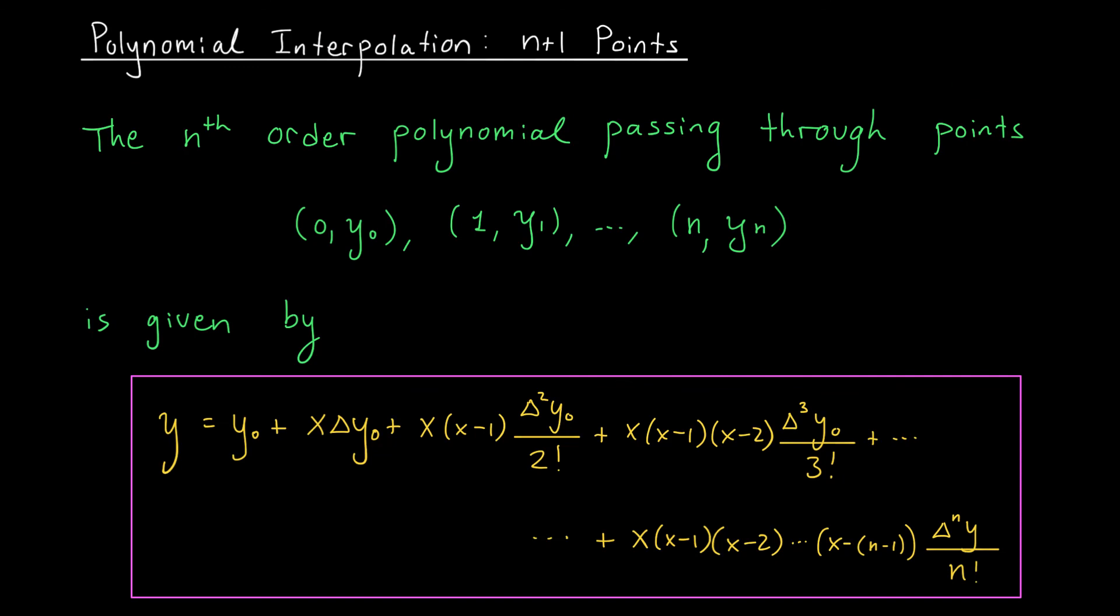The exact same methods that we use to find a cubic polynomial passing through four data points can be used to find a polynomial of order n passing through n plus 1 data points. The expression for this polynomial is given below. You can see that we have a constant term of y0 and then our terms begin to change in a very predictable way. We're multiplying by more x's at each stage. We take more forward differences at each stage and we're dividing by k factorial all the way up until n factorial.